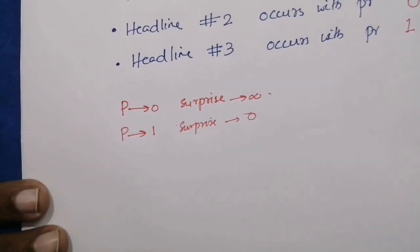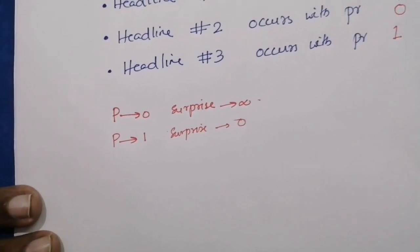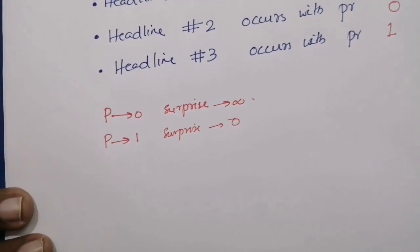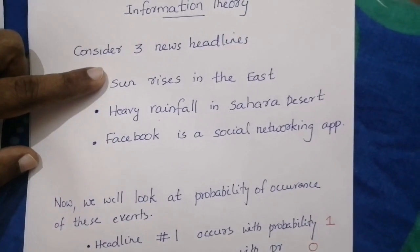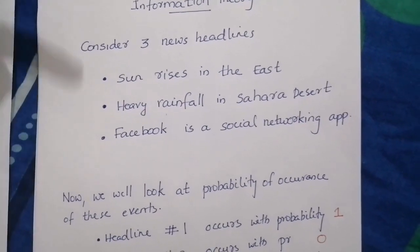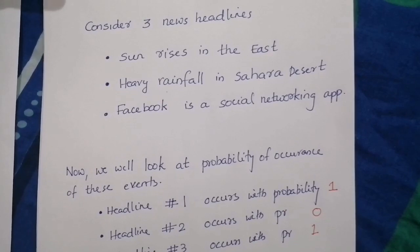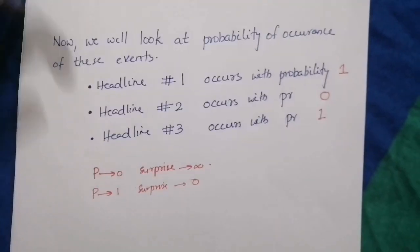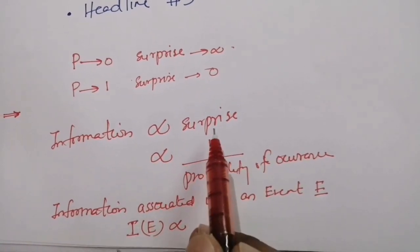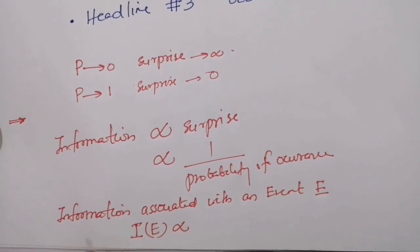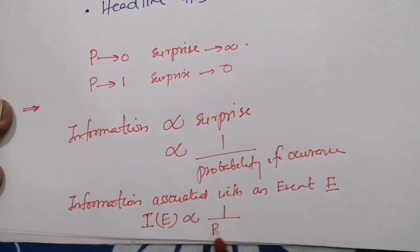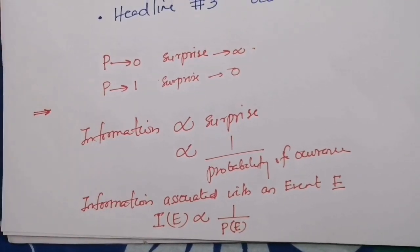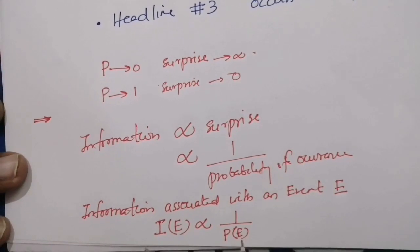The probability of occurrence of an event is a measure of uncertainty or unexpectedness of occurrence of that event. Information is directly related to surprise — there is no surprise associated with the first headline and more surprise associated with the second headline. Since surprise is inversely related to probability, the information I(e) is directly related to 1/p(e), or equivalently, information I(e) is inversely proportional to the probability of occurrence of event e.